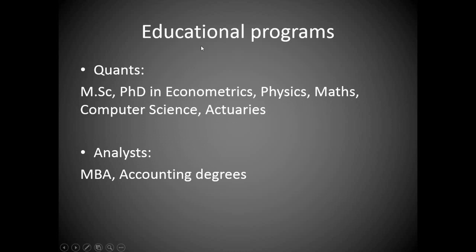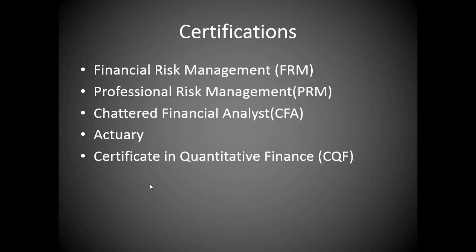What educational programs can one pursue? You can do a master's or PhD in econometrics, physics, maths, or computer science, or write actuarial papers to get into these fields. If someone wants a more managerial, accounting, or management position with some data analytics, they can go for an MBA or become a chartered accountant. There are also a number of internationally recognized certifications available as part-time programs — suitable even for those already in full-time master's programs who want to learn industry best practices.